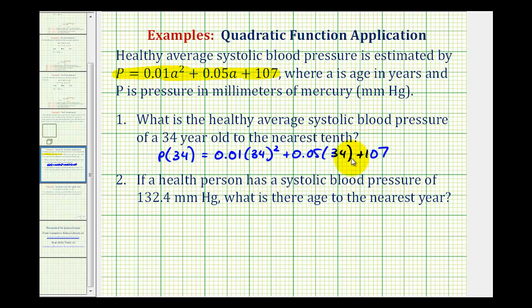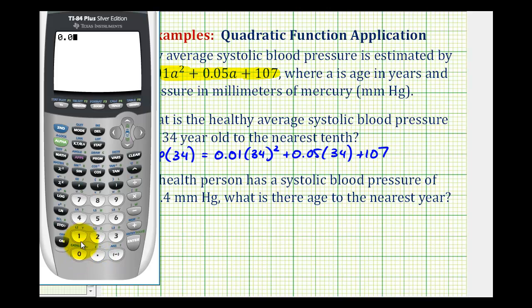And we'll go ahead and use the calculator to determine this value. So 0.01 times 34 squared plus 0.05 times 34 plus 107. Now they want us to round to the nearest tenth, so this will be approximately 120.3 millimeters of mercury.